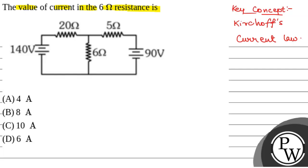So, according to Kirchhoff's Current Law, at any junction or at any point, sum of all the currents will be equal to 0.